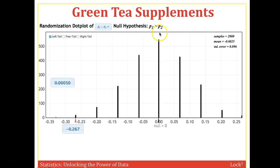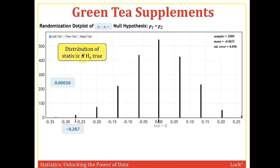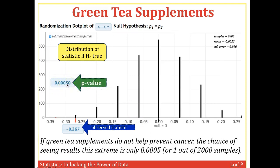Now looking at the green tea supplements example involving prostate cancer: p1 is the group that took a green tea supplement, and p2 is the group that took a placebo. We're given a distribution of 2,000 randomization samples assuming H0 is true, where p1 equals p2 and the null is 0. The observed statistic was 1/30 minus 9/30, giving us −0.267 — very far from the null. This gives a fairly small p-value of 0.0005. So if green tea supplements do not prevent cancer, the chance of seeing results this extreme is only 1 out of 2,000, providing fairly strong evidence that green tea seems to have a positive effect on lowering cancer rates.